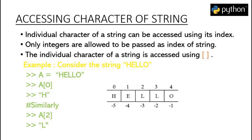If we want to access the individual element of the string at a particular index, we use the bracket notation. The syntax is that we first write the name of the string variable, followed by square brackets, and within the brackets we write the index position. For example, if we have a variable A storing the string 'hello' and we want to know what is stored at index 0, we write A followed by brackets with 0 inside, and we get H as the output.